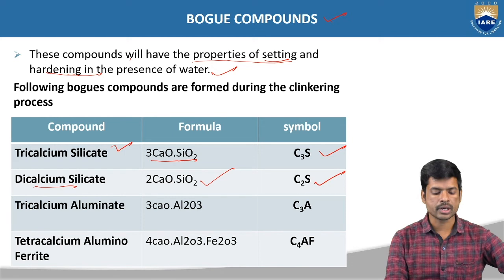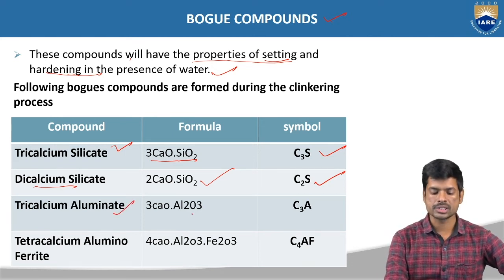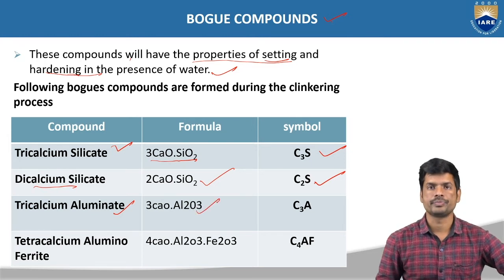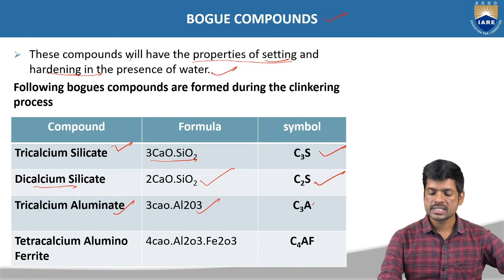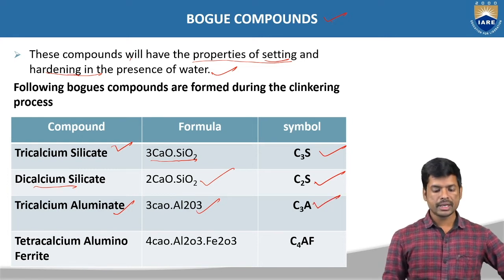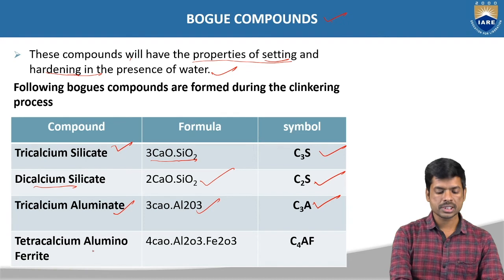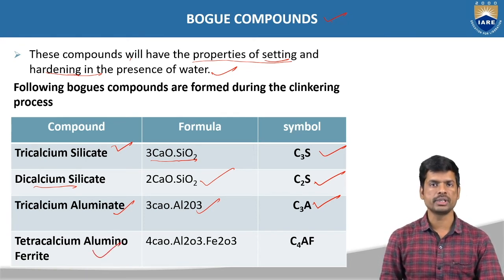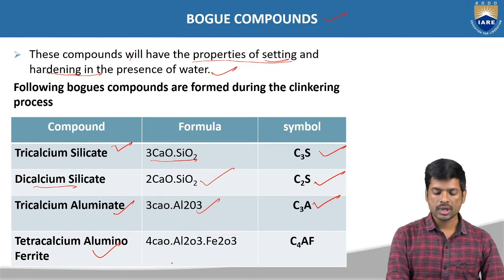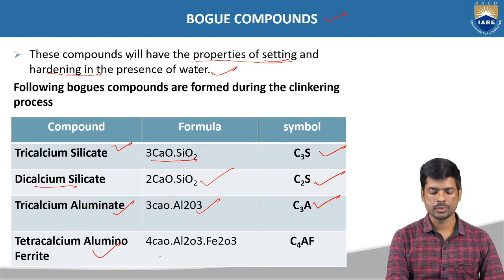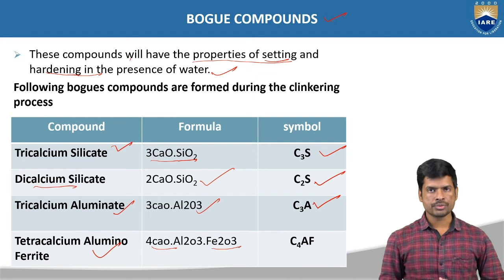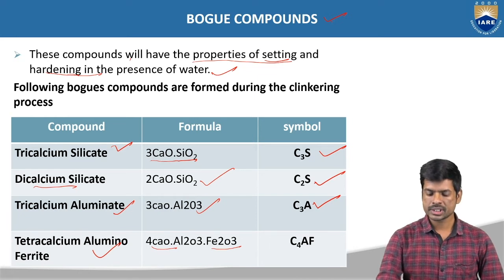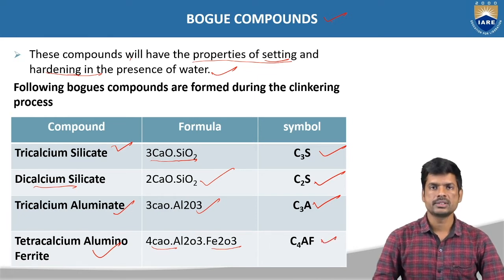The third major component is tricalcium aluminate. The chemical formula is 3CaO·Al2O3, and the symbol is C3A. The fourth major compound is tetracalcium aluminoferrite. The formula of this particular tetracalcium aluminoferrite is 4CaO·Al2O3·Fe2O3, and the representation is C4AF.